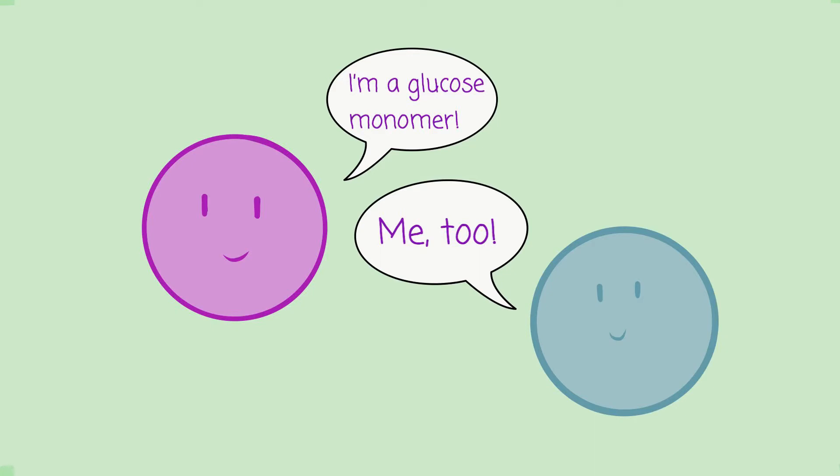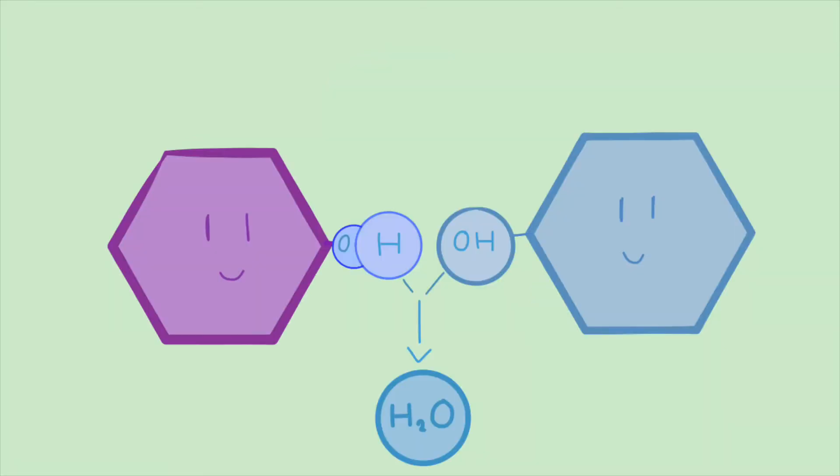First, two corresponding monomers must come into contact. These may be amino acids, nucleotides, or monosaccharides as shown on the screen. Each of these monomers has a hydroxide group attached on either side. A hydroxide group is an oxygen bonded to a hydrogen.